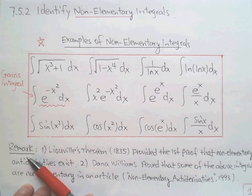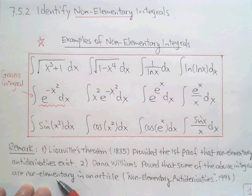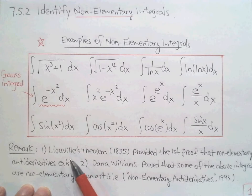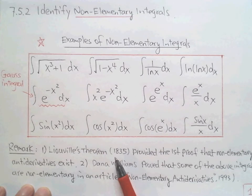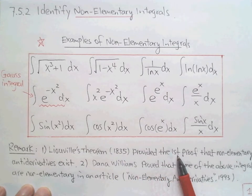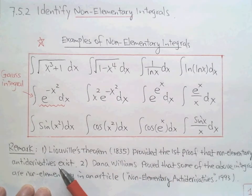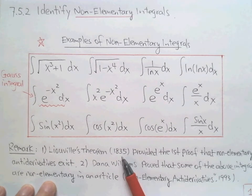Here, I have a remark to show you. I don't have any question for you. I'll just show you an example. So here, I have two remarks. The first, can we see, the Liouville's theorem in 1835. This is the first proof. The first theory proved that non-elementary anti-derivative exists. That's the first time.